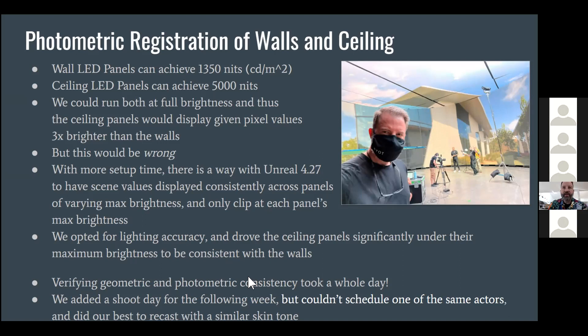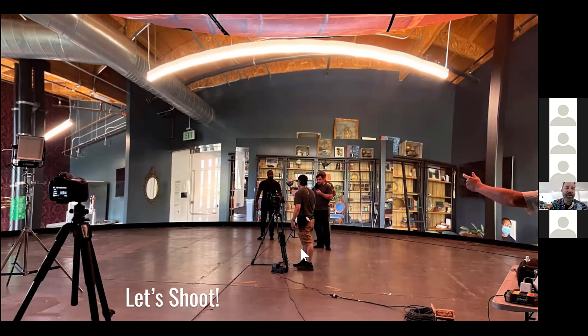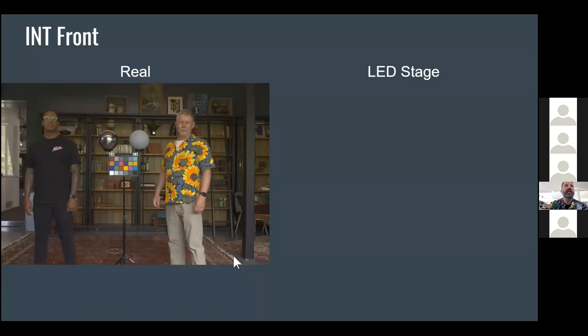With all that figured out, we could actually start shooting. We brought our two actors on, but since we spent the first two days calibrating, we had to come back a week later and one of our actors had disappeared. We tried to match somebody with similar skin tone, though it's suboptimal not having a one-for-one comparison. Our first lighting environment was the interior front. Here's what we actually shot at Riot, then we put this HDRI map on the stage, had the actors stand in it, took a decently exposed photo, and here's what we got.